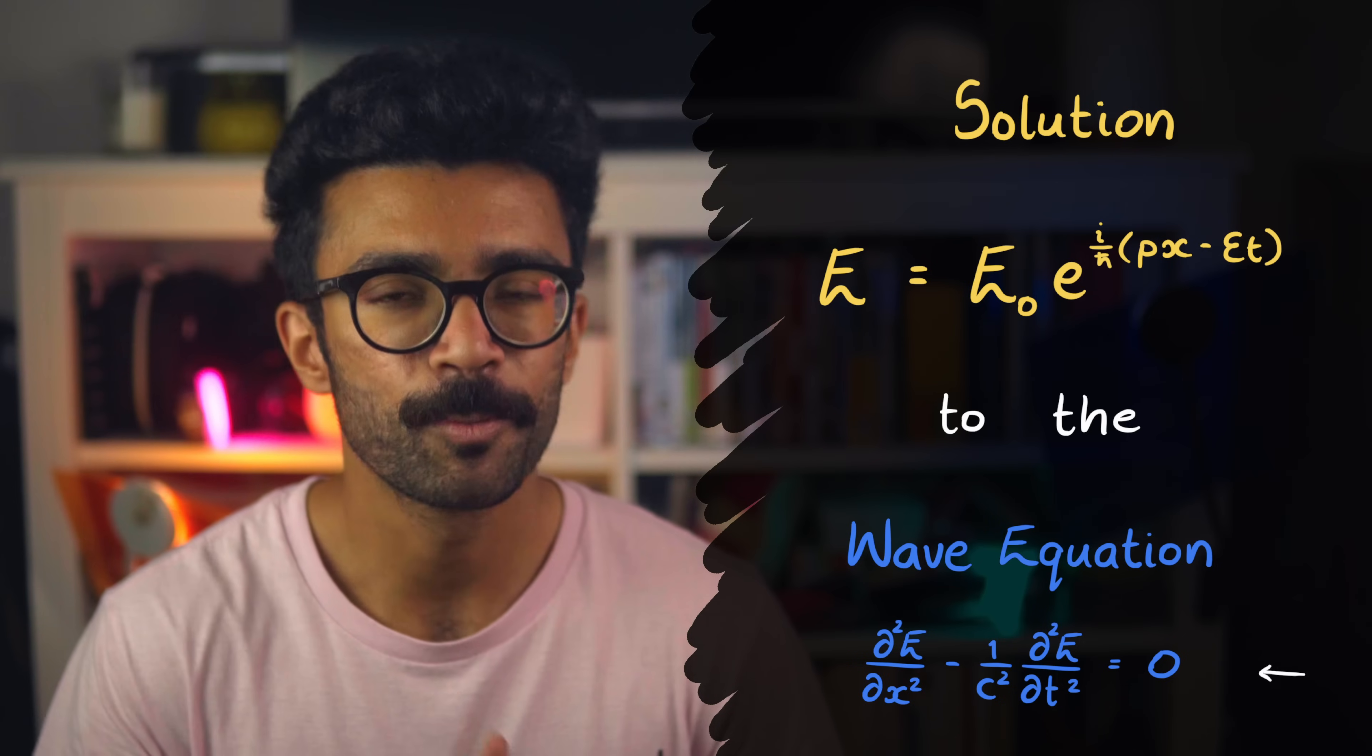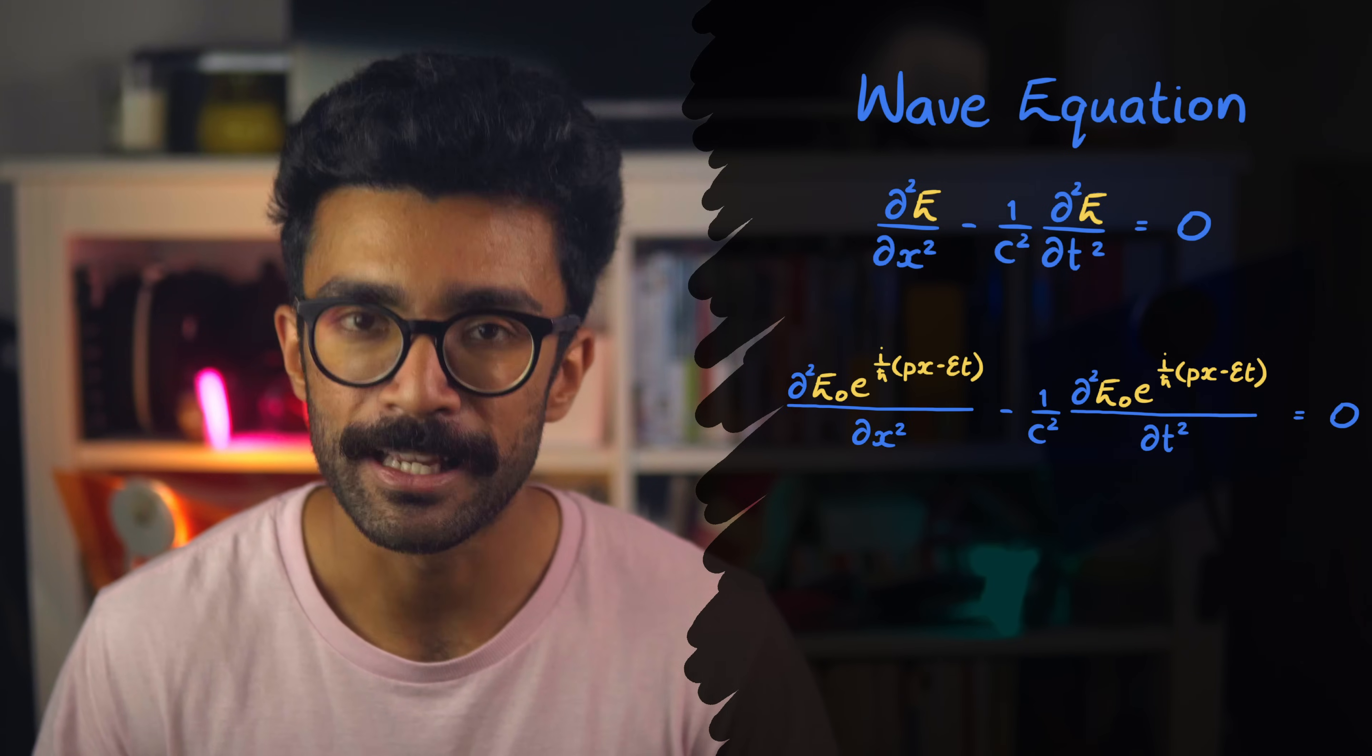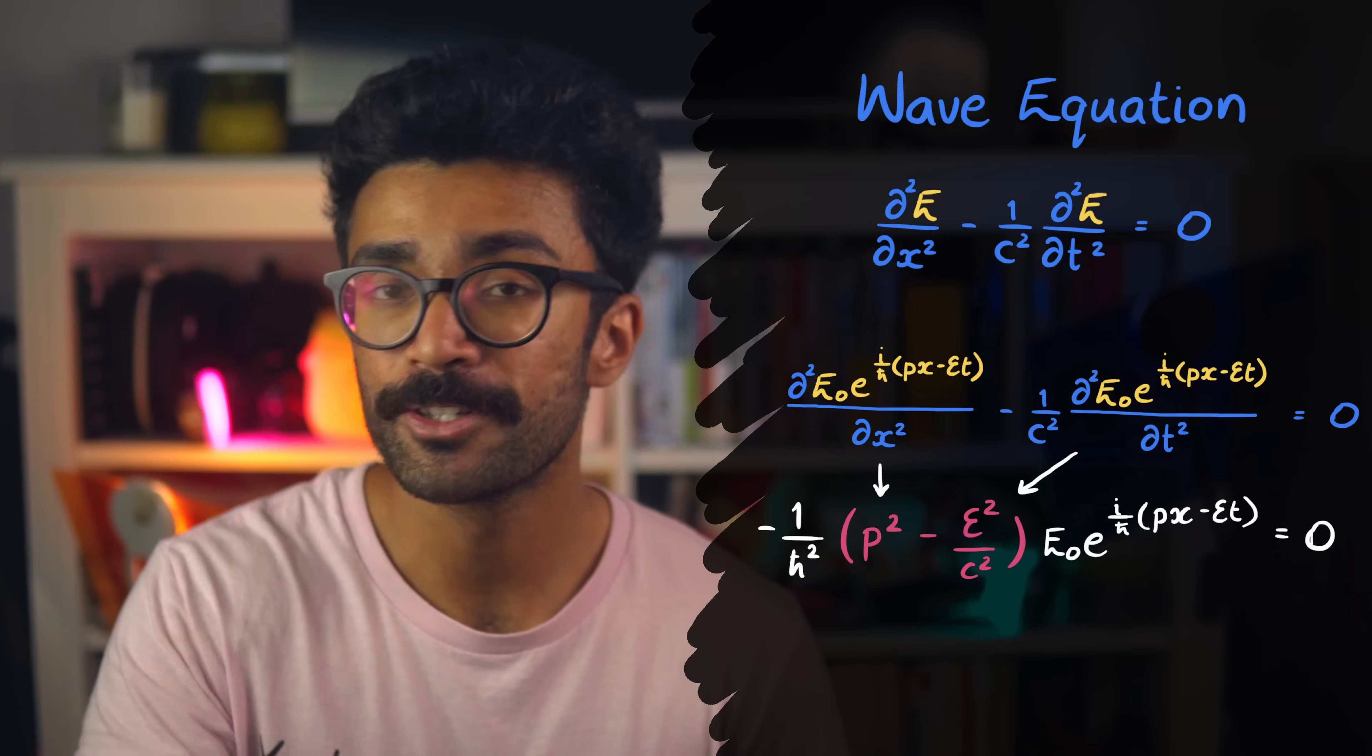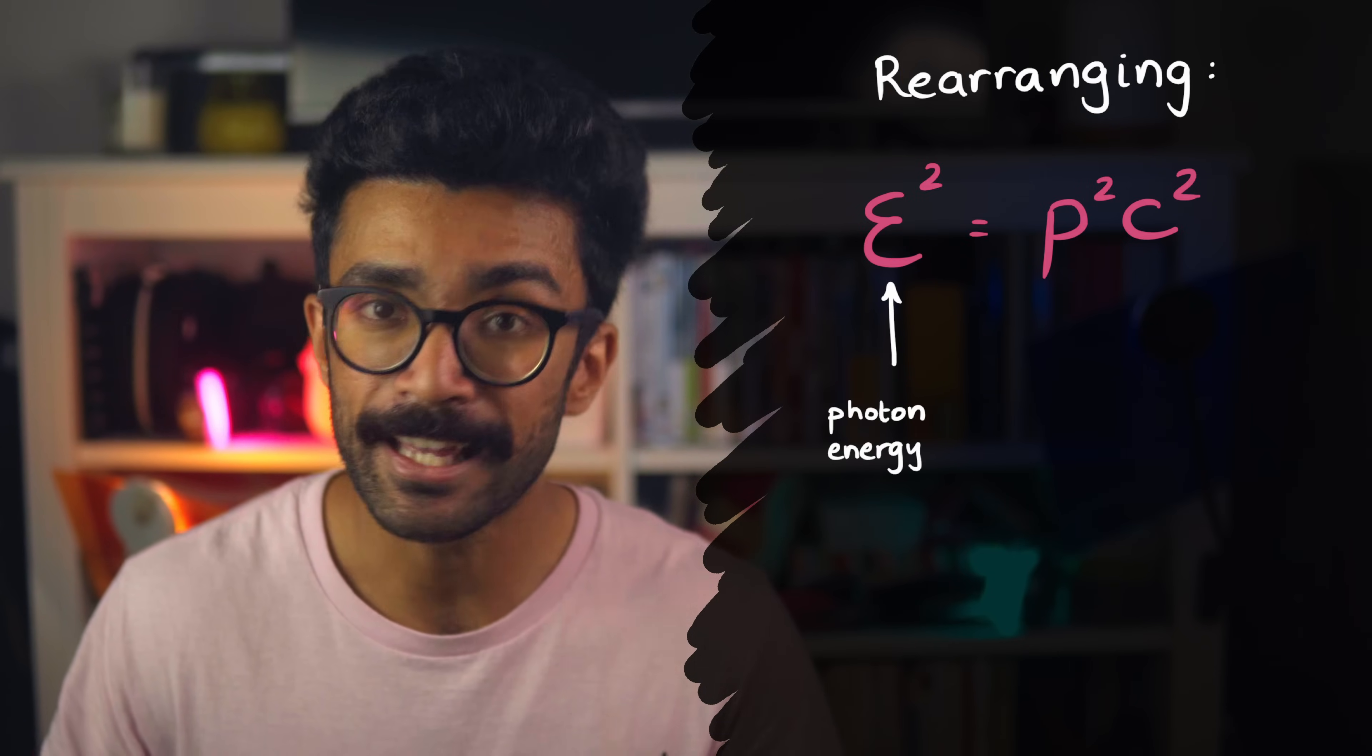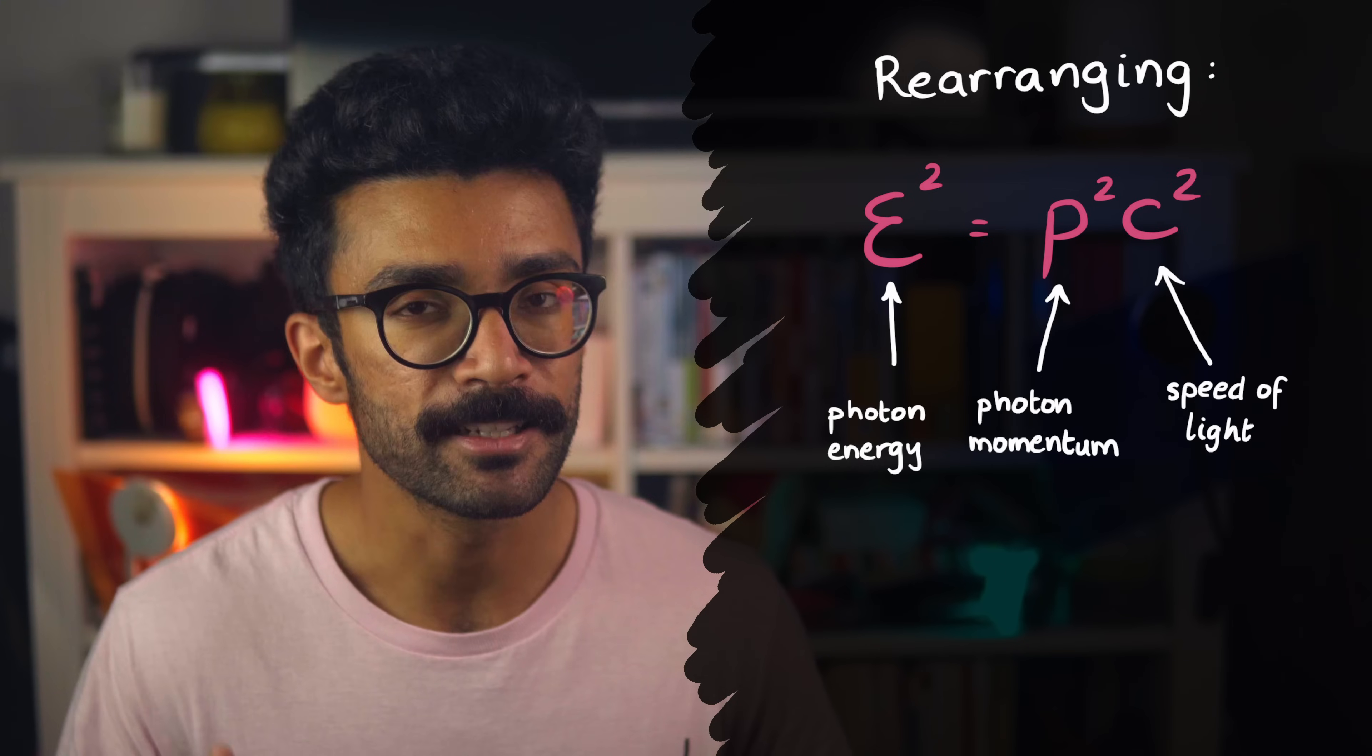Now I've told you that this wave here is a solution to the wave equation, but let's actually confirm that. What we can do is to substitute this solution into our wave equation and see what that gives us. So every time we see the electric field E in our equation, we replace it with our solution. Then we take the partial derivatives. If you know calculus, then feel free to pause the video and have a go at that. Basically, we just do the maths that the equation is asking us to do. When we do this, what we find in reality is that our solution is only a solution if this relationship is satisfied. The square of the energy of a photon associated with our EM wave is equal to the square of the photon's momentum multiplied by the square of its speed, c.